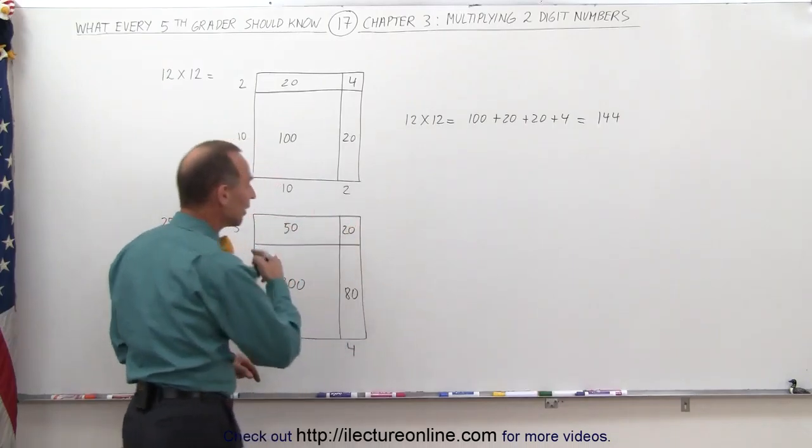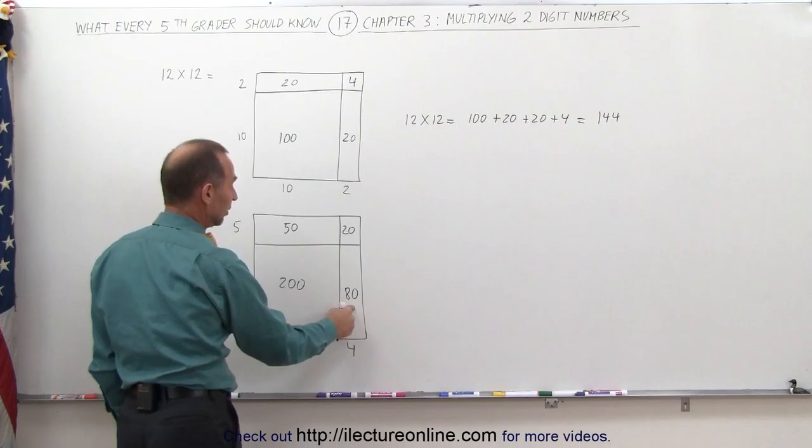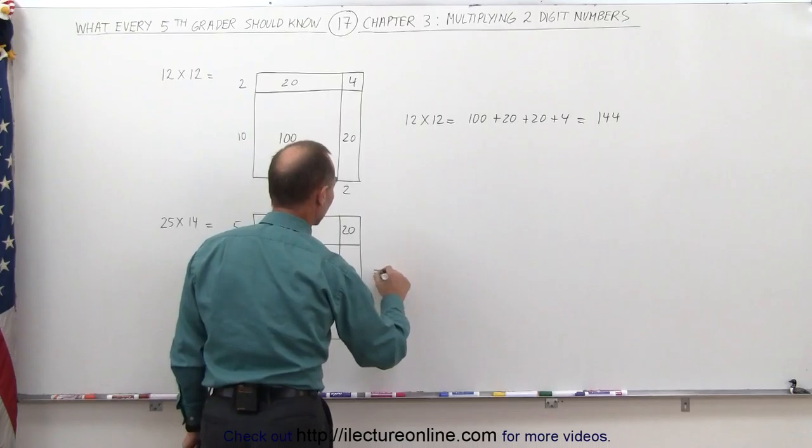And all I have to do is add all these together. Now notice that 20 plus 80 is 100, 100 plus 200 is 300, and 300 plus 50 is equal to 350.